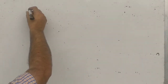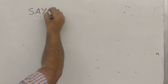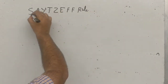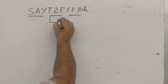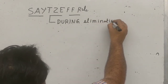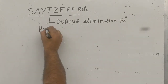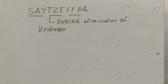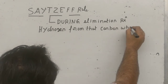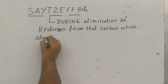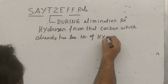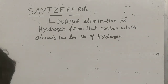In this elimination reaction, we need to revise Saytzeff's rule — which you have already done in 11th class. Saytzeff's rule states that during elimination reaction, hydrogen is removed from that carbon which already has a lesser number of hydrogens. We used to say 'poorer becomes poorer' with respect to hydrogen — we remove hydrogen mainly from the carbon that already has fewer hydrogens.